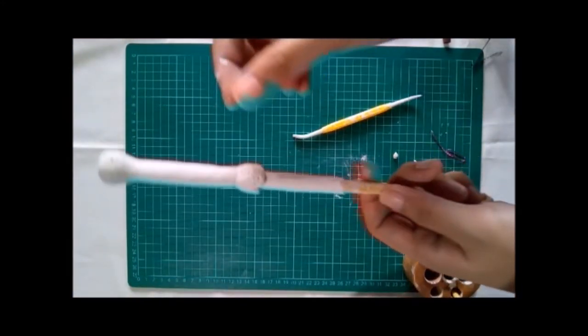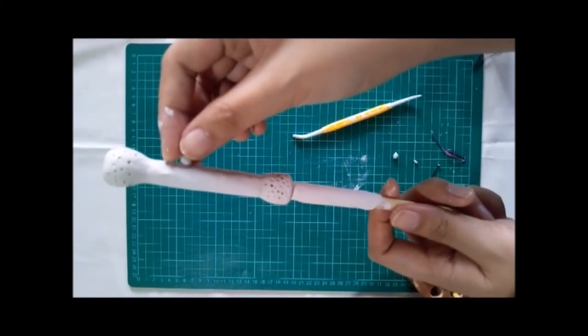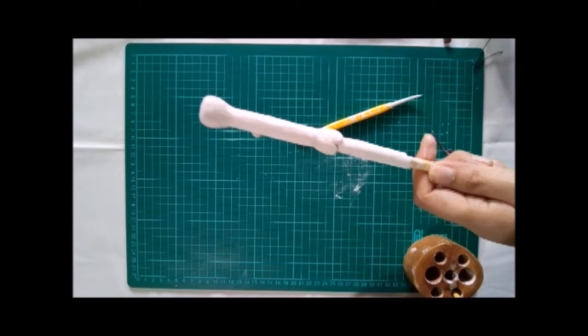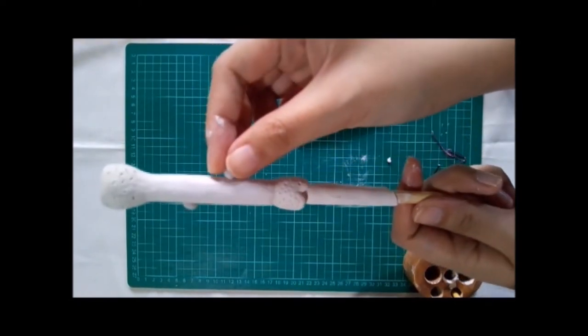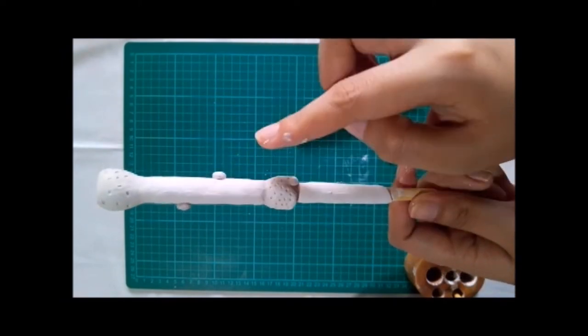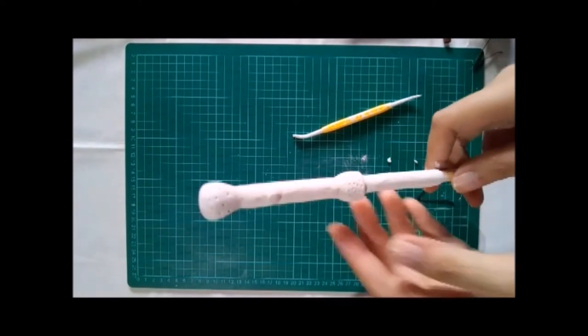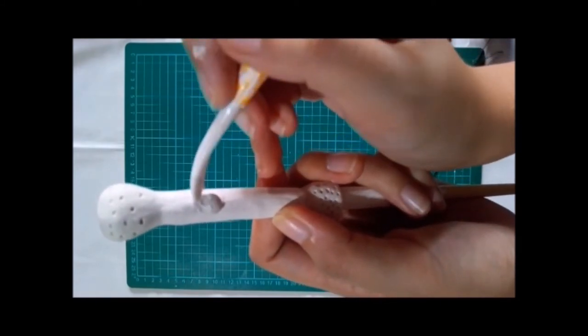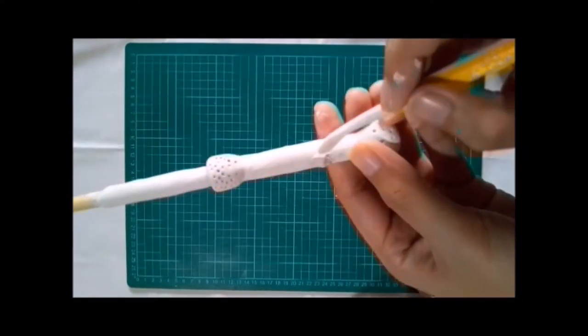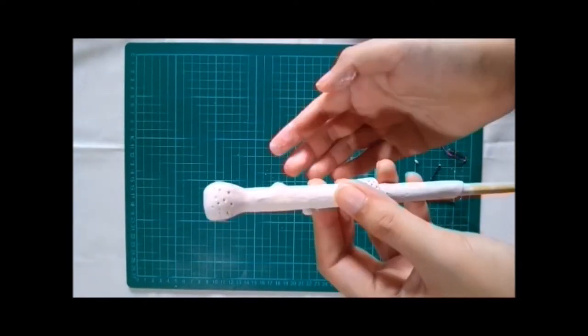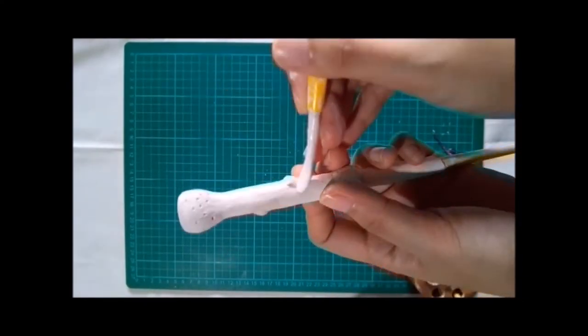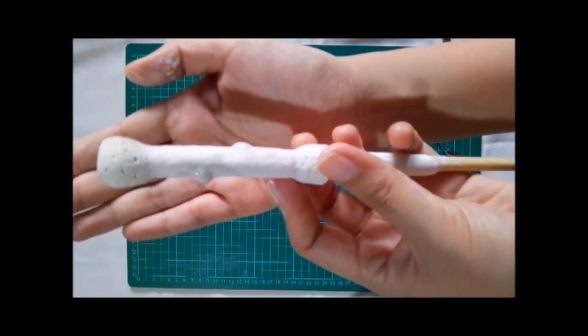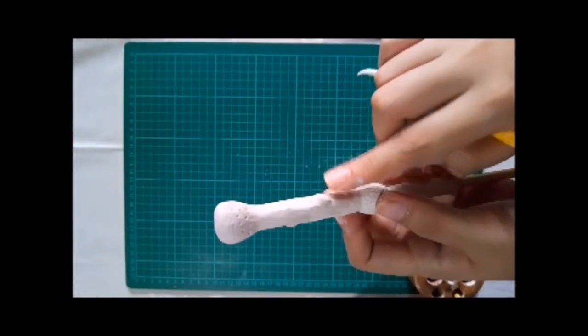Now I'm making the buds of our wand. And of course we need to smoothen it out, just like this. To make the complete look of our buds, we are going to make a hole out of it.